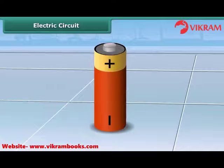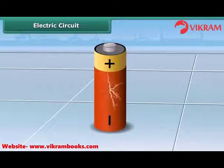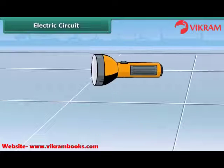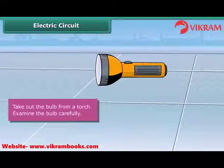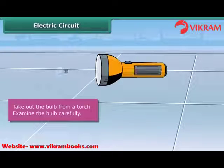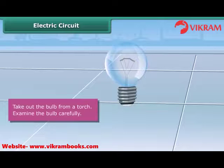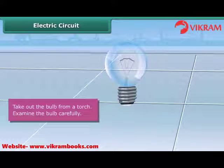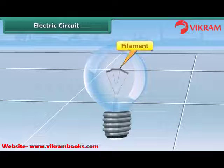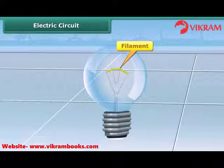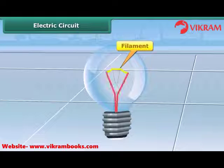An electric cell or a dry cell is the source of electricity for the bulb to glow. Let us know how the bulb in a torch glows. Take out the bulb from a torch. You can see that the bulb is a small globe of thin glass, inside which a coiled filament is fixed on two thick wires.